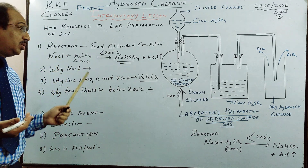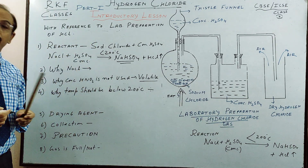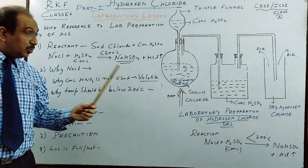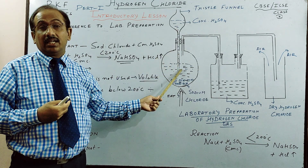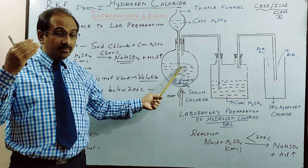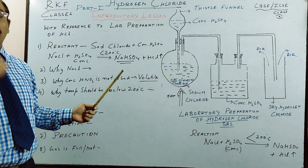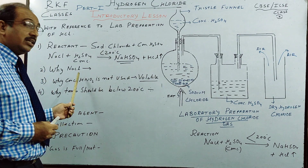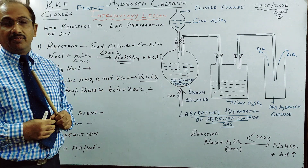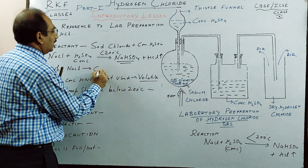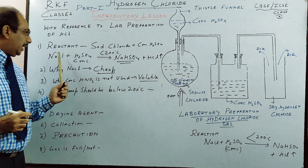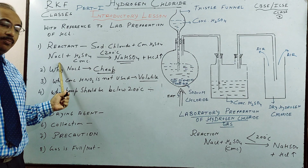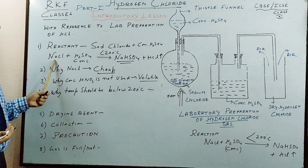Questions in chemistry are never direct — they will not ask 'how do you prepare HCl?' The question will be: 'What happens when sodium chloride reacts with concentrated sulphuric acid?' You have to remember that we have taken sodium chloride and concentrated sulphuric acid to make HCl gas. In chemistry, you have to understand, then memorize, then use that knowledge to answer. Why NaCl? Sodium chloride is the cheapest chloride — you could use any other chloride, but NaCl is cheapest.